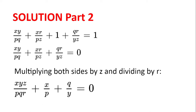Now, we can multiply both sides by Z and divide both sides by R, because this is the case where none of the letters are equal to 0. And we get XYZ divided by PQR plus X divided by P plus Q divided by Y is equal to 0.